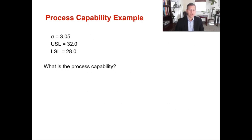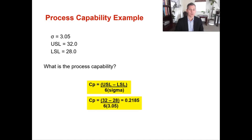Here's an example: sigma is 3.05, the upper specification limit is 32, and the lower specification limit is 28. You plug in those numbers: 32 minus 28 over 6 multiplied by 3.05. That gives you 4 divided by 18.3, which equals a process capability of approximately 0.2185. Is that a good process? No — it's a terrible process. A CP of 1 is barely capable and 1.33 means relatively good capability. A CP of 0.2185 means a lot of outputs are not falling within the design specification.